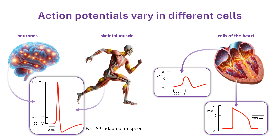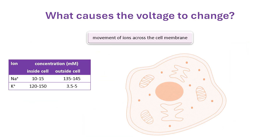I will explain the ionic basis of these differences in a separate video. For now, I will focus on the simplest example of an action potential, the neuronal action potential. What causes the membrane voltage to change? It results from the movement of charged ions across the cell membrane. Ions are not uniformly distributed across cell membranes. For example, the sodium ion concentration is at least tenfold higher outside the cell compared with inside, creating a large driving force trying to move sodium ions from the outside to the inside of the cell to even out the concentration.